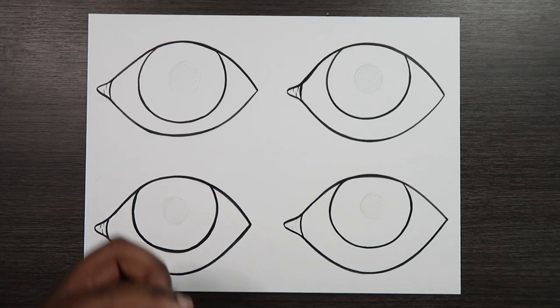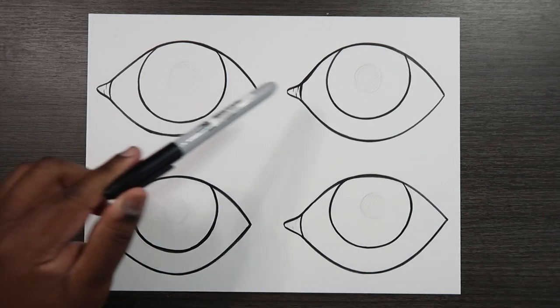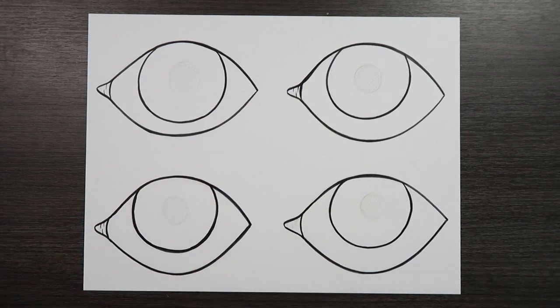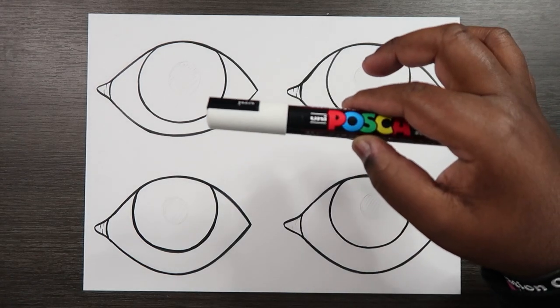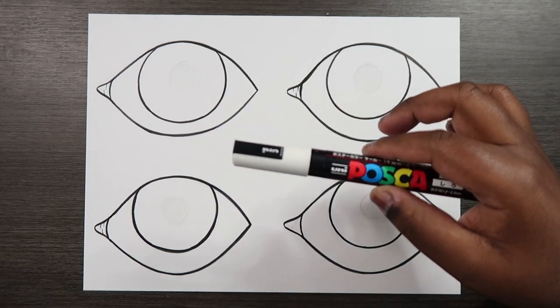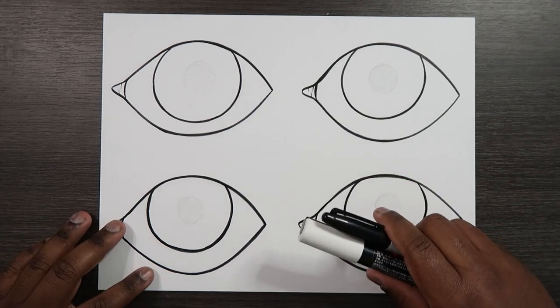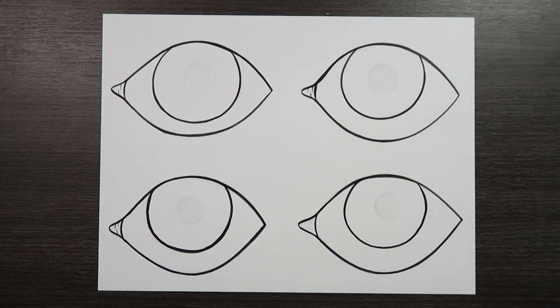In addition to those supplies I'm also going to be using my sharpie markers to color in the pupils that you can kind of see on screen. And I'm going to be using my white Posca paint pen to add some highlights. But that's everything you'll need so without further ado let's get started.